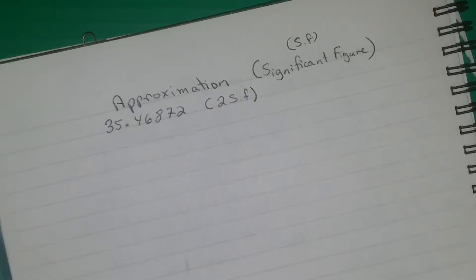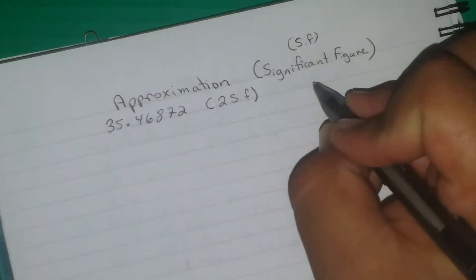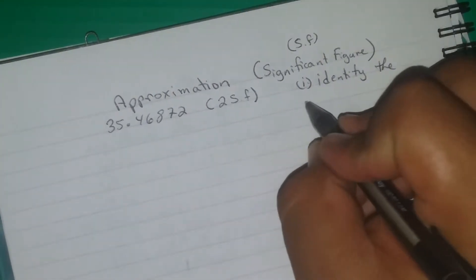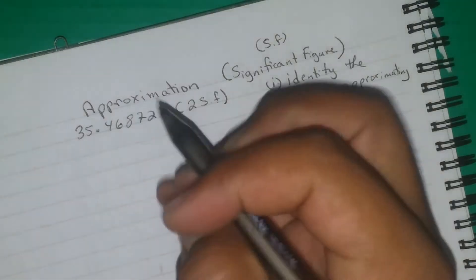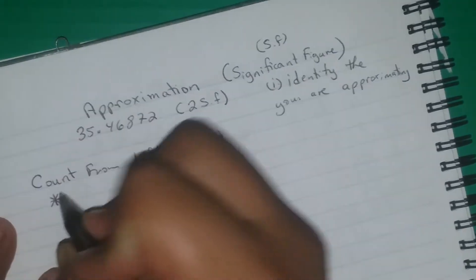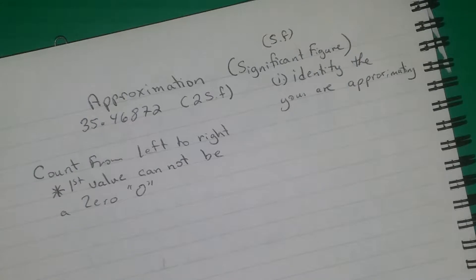The first thing you have to do is identify which one is your second significant figure. So identify the number you are approximating — that is the first thing we need to do.